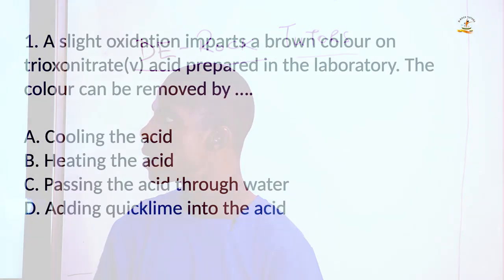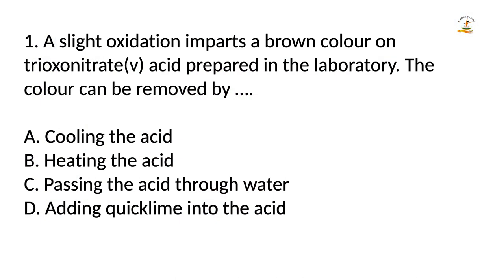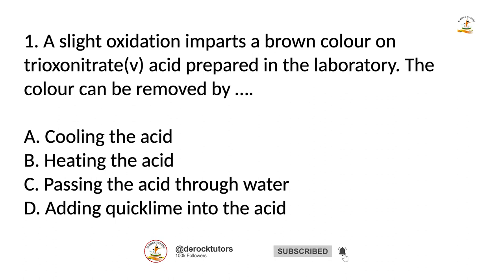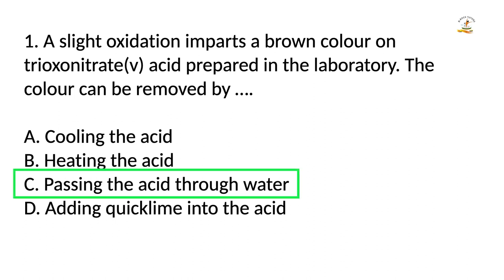Question one: oxygen imparts a brown color on trioxonitrate(V) acid prepared in the laboratory. The color can be removed by passing the acid through water. The impurity in the acid produces nitrogen(II) oxide, which can easily be oxidized to nitrogen(IV) oxide that produces the brown coloration. So the answer is passing the acid through water.